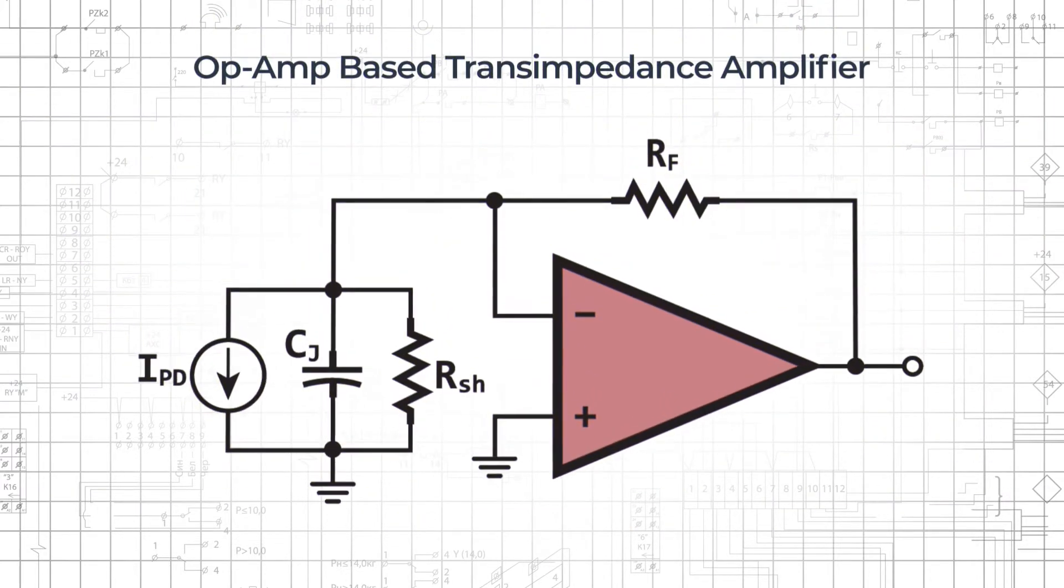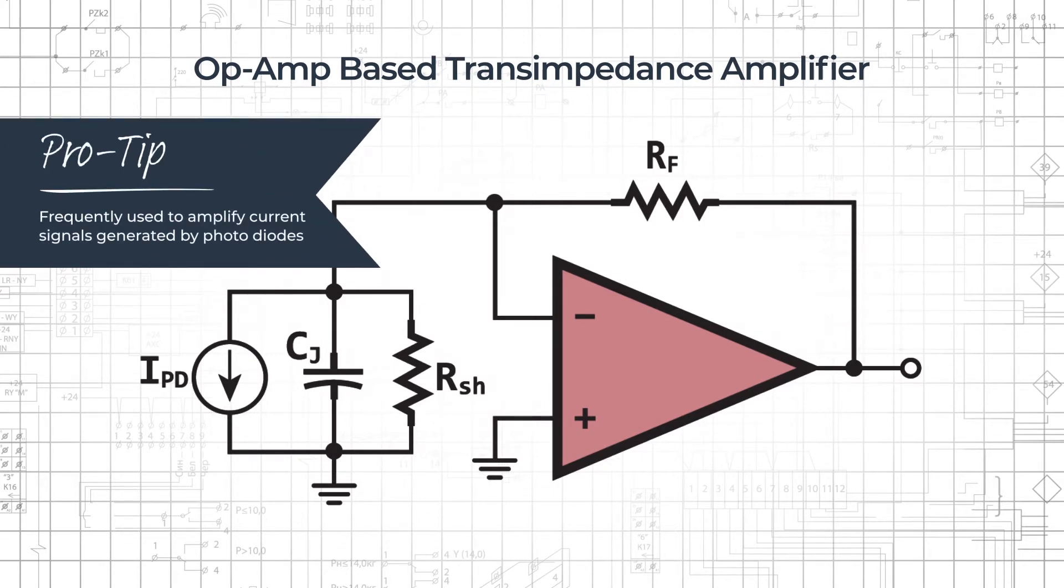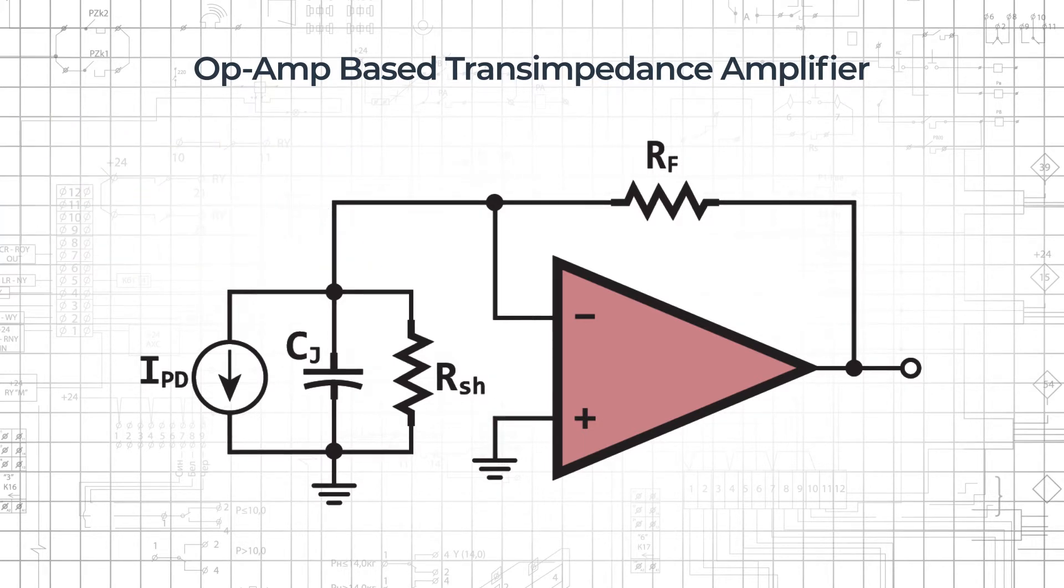Op-amp-based transimpedance amplifiers are frequently used to amplify current signals generated by photodiodes. These implementations are susceptible to oscillation problems caused by the photodiode's junction capacitance, which capacitance is shown here where the photodiode has been replaced by an equivalent circuit.